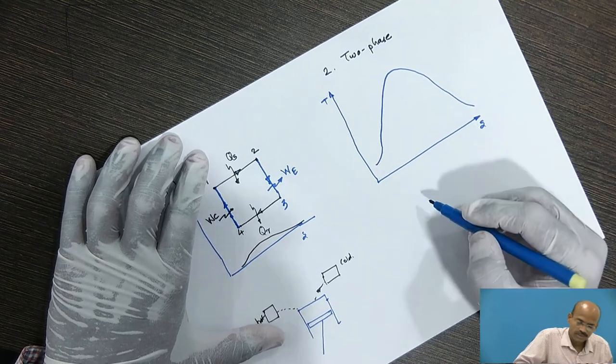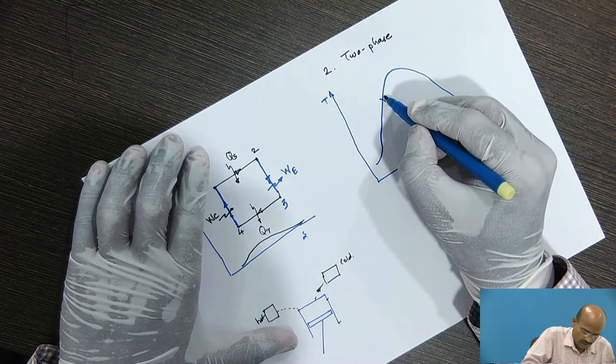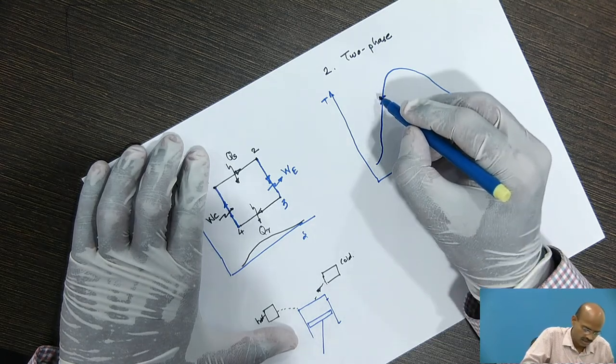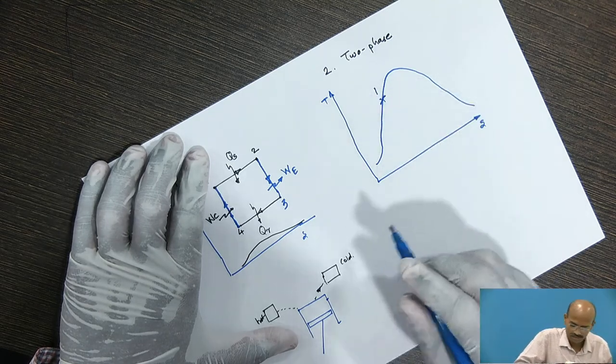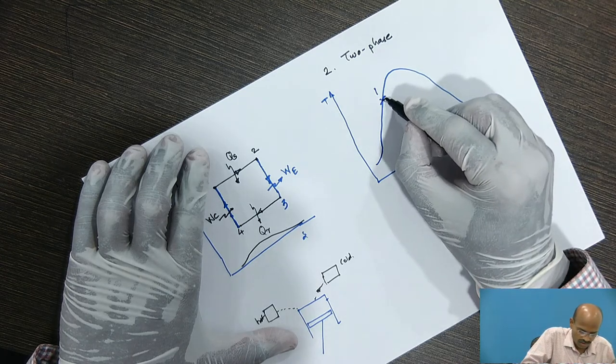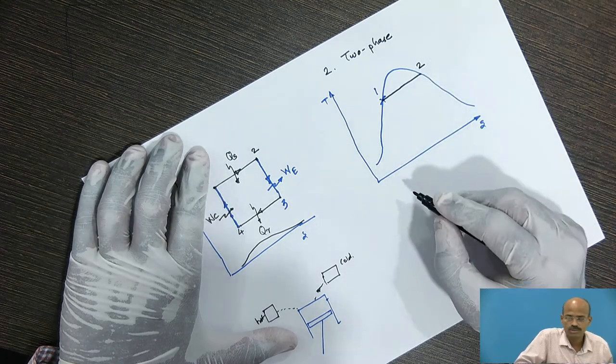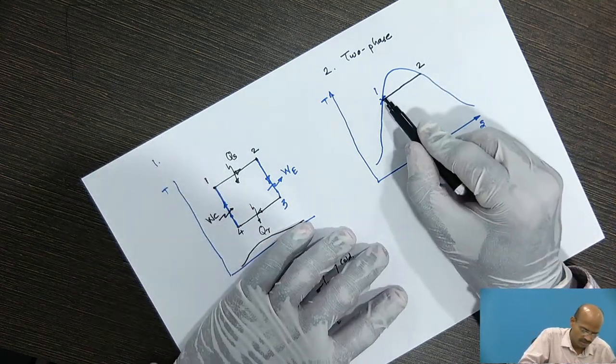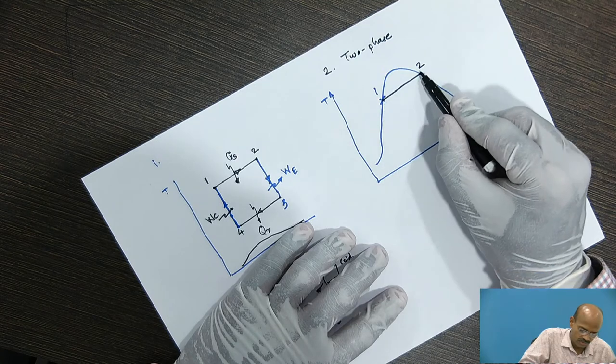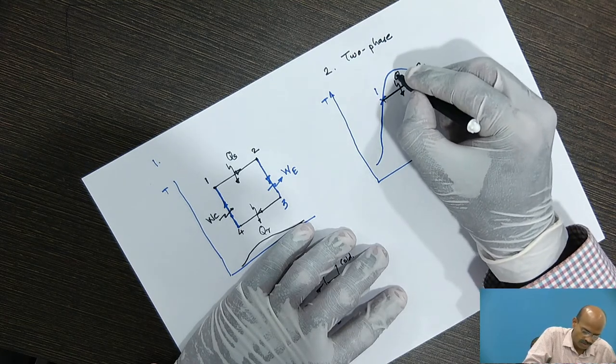In the two phase Carnot cycle, the fluid at the beginning of the heat supply is on the saturated liquid curve. Heat supply occurs isothermally, isobarically up to point number 2. Now, what has happened here? The saturated liquid has converted into saturated vapor during the supply of heat Qs.